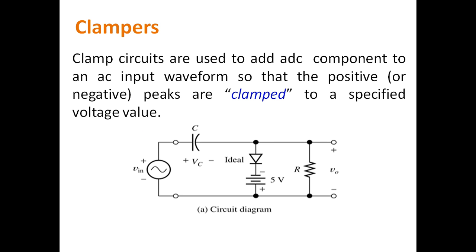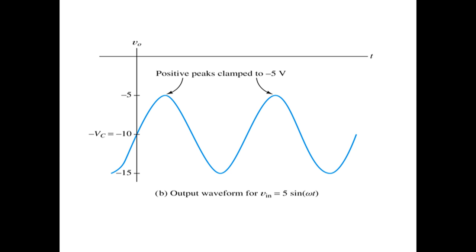Finally, clamper circuits are mainly used to add a DC component to an AC input waveform. Figure A shows the clamper circuit diagram. As seen in the output waveform, the output voltage is clamped to −5 volts.